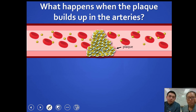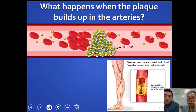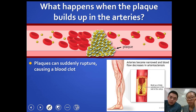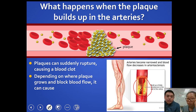When plaque builds up in arteries and you don't have surgical intervention or lifestyle changes, it can eventually block your arteries entirely. This restricts blood flow and causes it to back up. It can also cause arteries to rupture, leading to a blood clot. Depending on where the plaque grows and blocks blood flow, it can cause a heart attack, stroke, or peripheral vascular disease.